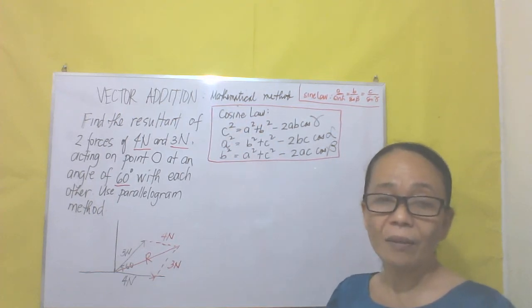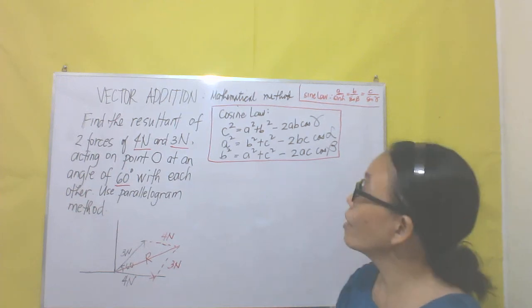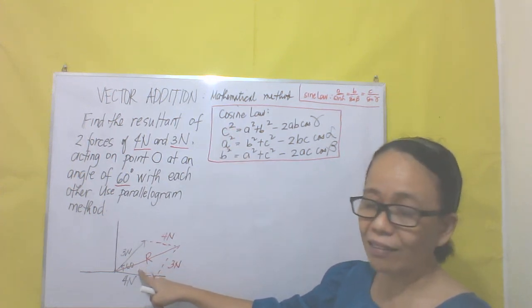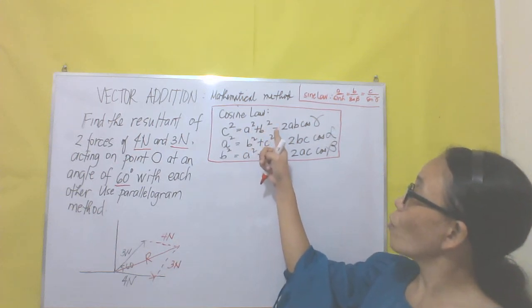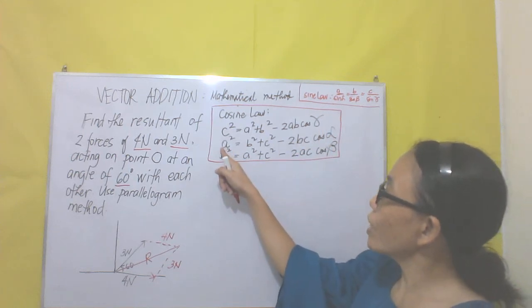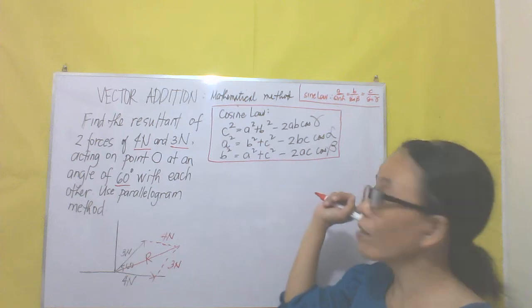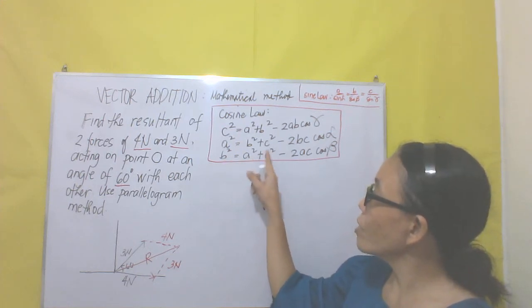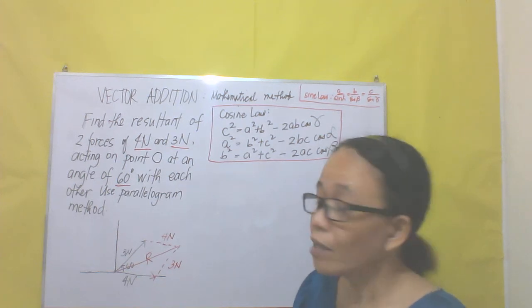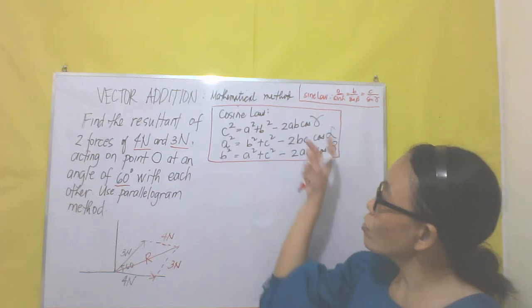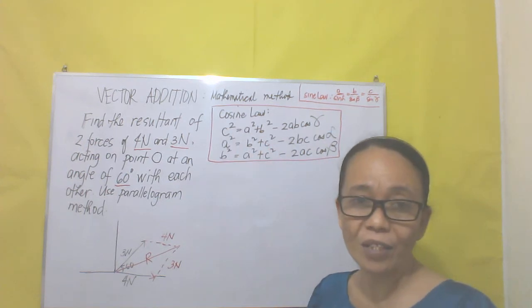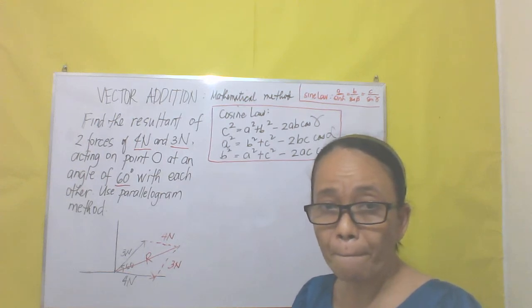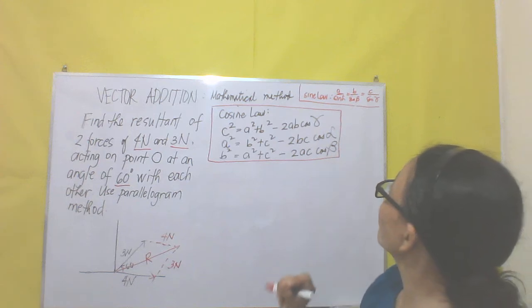We have the mathematical laws that we're going to apply: the cosine law and the sine law. For the cosine law: c² = a² + b² − 2ab·cos(γ). For side a: a² = b² + c² − 2bc·cos(α). For side b: b² = a² + c² − 2ac·cos(β). This equation is also derived from the Pythagorean theorem. For the sine law: a/sin(α) = b/sin(β) = c/sin(γ).